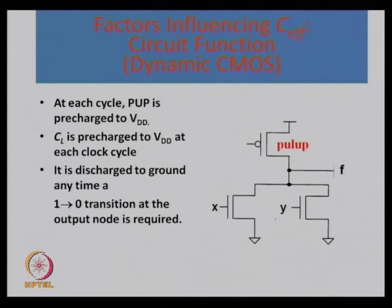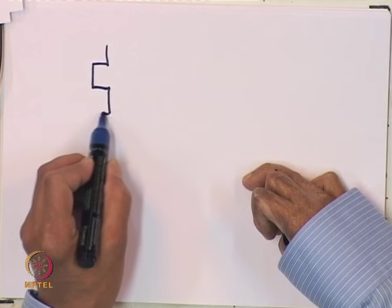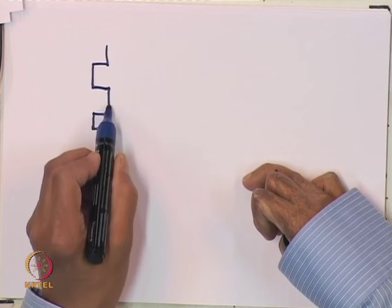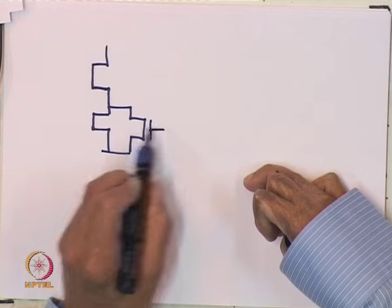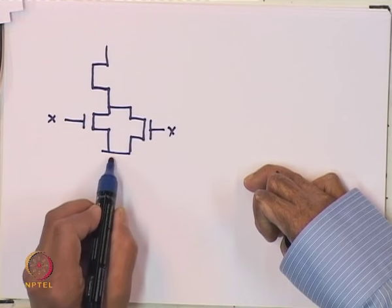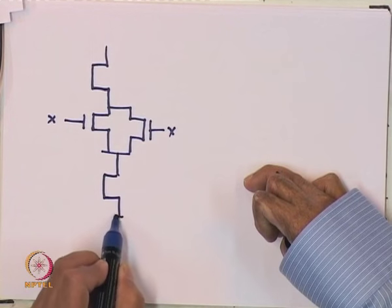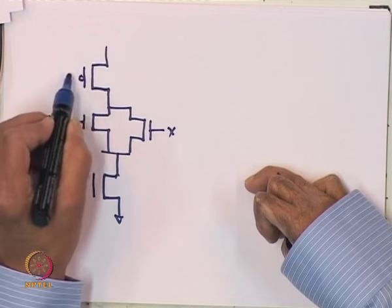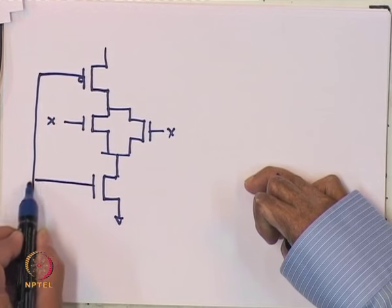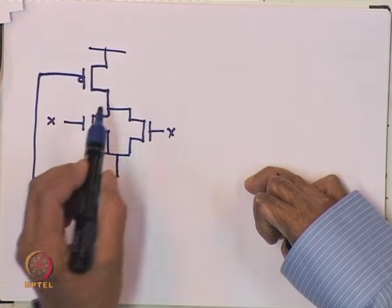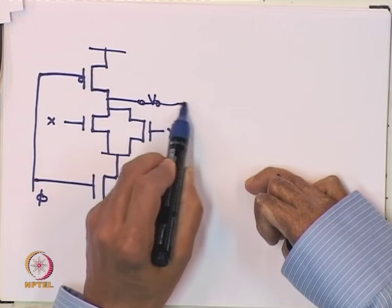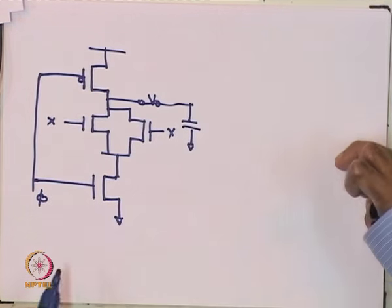Now take a dynamic circuit — so far we have only talked about static CMOS. A typical CMOS dynamic circuit looks like this: you have a P-channel device, a NOR gate with two N-channel devices with inputs X and Y, and another NMOS device. The PMOS is dynamically controlled through a clock phi, with power supply and output V_out with a capacitance. This is the beginning of the dynamic circuit analysis.